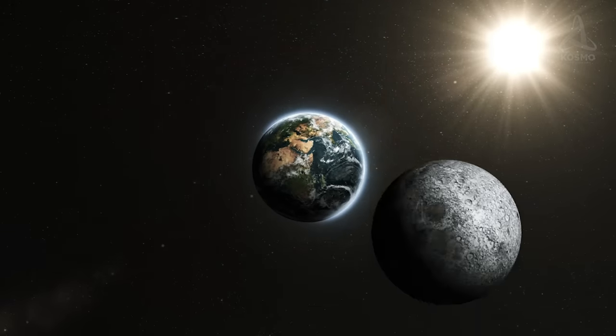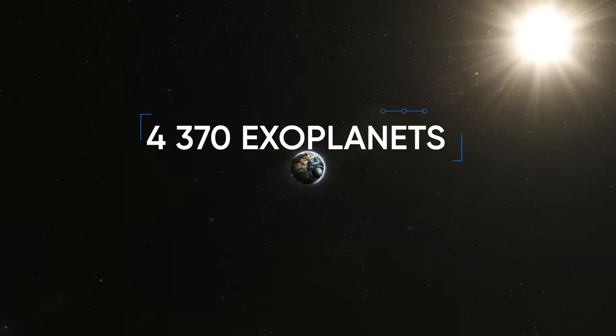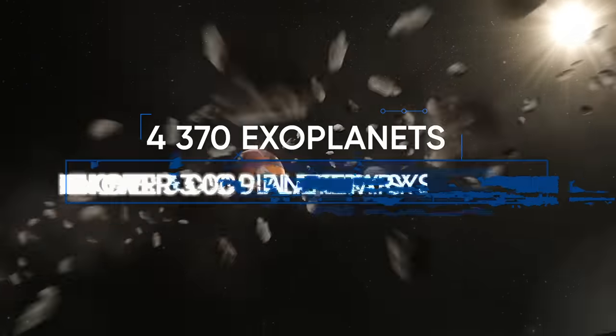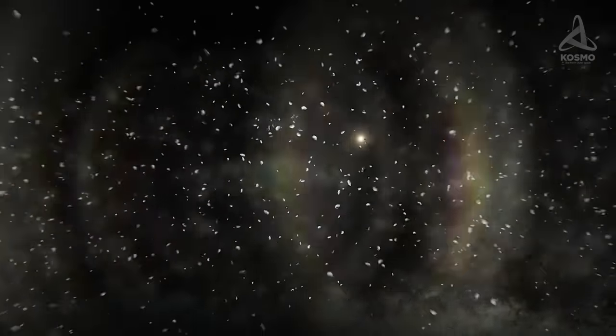The recent past heralded a boom in discovering exoplanets. There are 4,370 exoplanets discovered in over 3,000 planetary systems so far. In addition to these, more than 3,000 objects are awaiting confirmation of their exoplanet status.